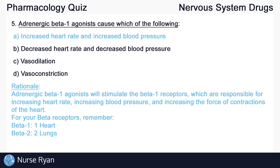Adrenergic beta-1 agonists will stimulate the beta-1 receptors, which are responsible for increasing heart rate, increasing blood pressure, and increasing the force of contractions of the heart.